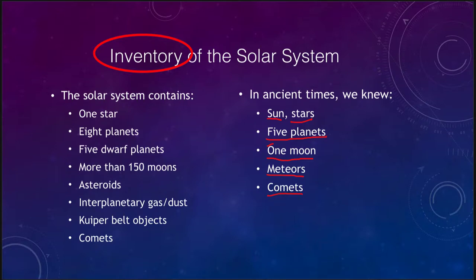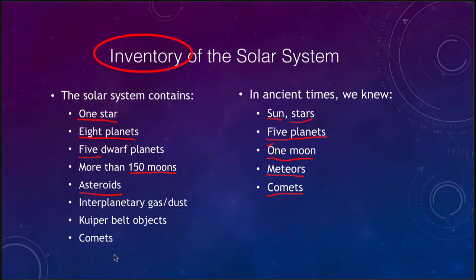Now we see a lot more and have a much better understanding. We know our solar system contains one and only one star, and that the rest of the stars could be parts of other solar systems. We are now up to eight planets, five dwarf planets, and more than 150 moons known throughout the solar system. Asteroids have been discovered, along with interplanetary gas and dust, Kuiper belt objects, and we still know of comets but with a much better understanding of them.